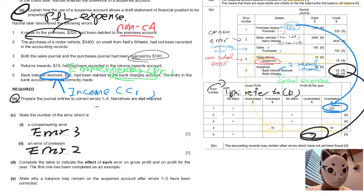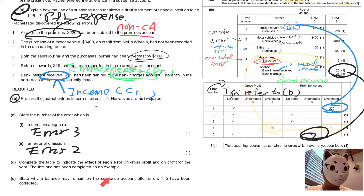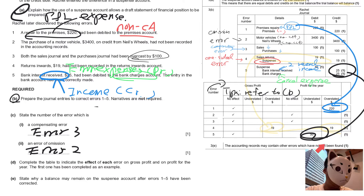For Part E, the reason there is a suspense account balance is that there are errors that have not yet been identified — straightforward and easy.